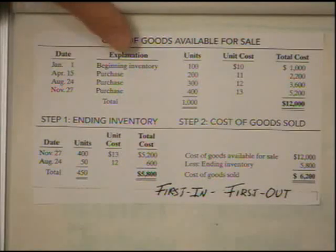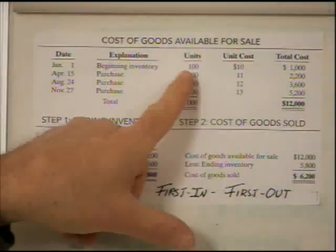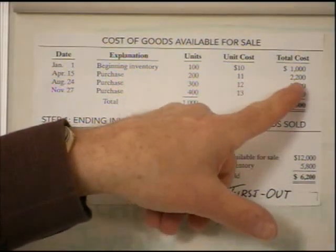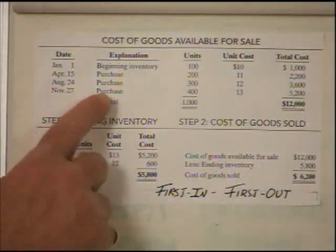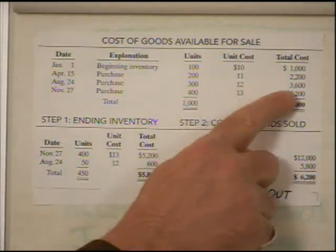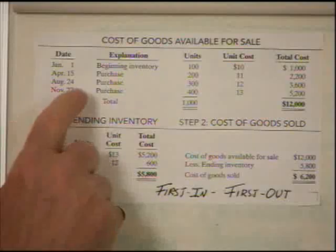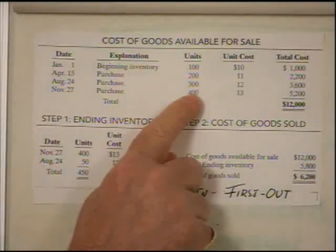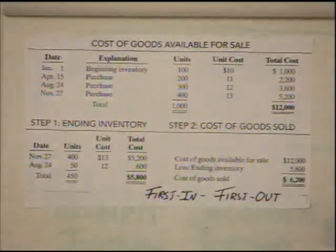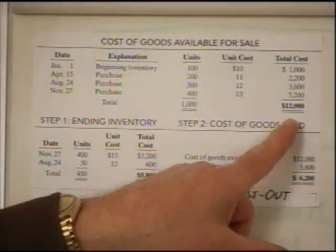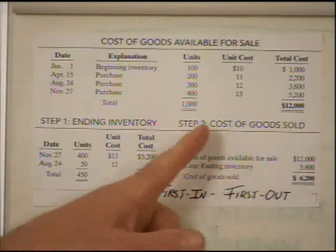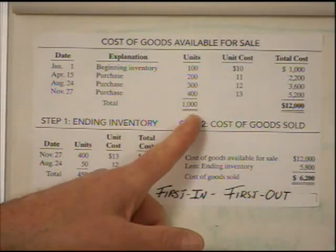On April 15th, we purchased another 200 units at $11 per unit, so extended out it's $2,200. On August 24th, they purchased another 300 units at $12 a unit, which extended out is $3,600. And on November 27th, another 400 units at $13, extended out is $5,200. When we total all that up, all the units purchased throughout the year cost us $12,000, and we purchased 1,000 units total.